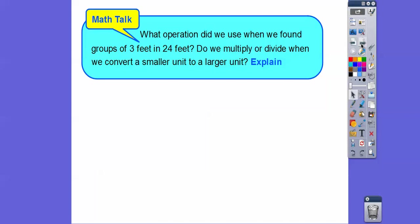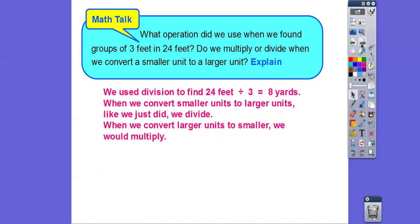What operation did we use when we found groups of 3 feet in 24? We used division. So do we multiply or divide when we convert a smaller unit to a larger unit? We used division — 24 feet divided by 3 gave us 8 yards. When we convert smaller units to larger units, we divide. And when we convert larger units to smaller units, we do the opposite: we multiply.